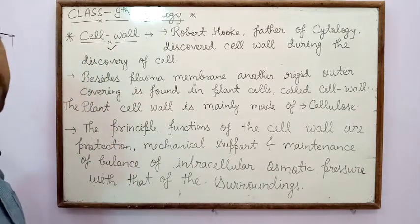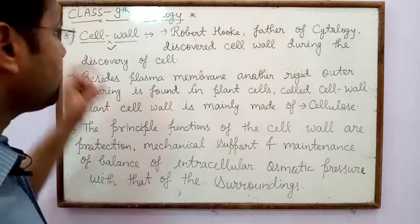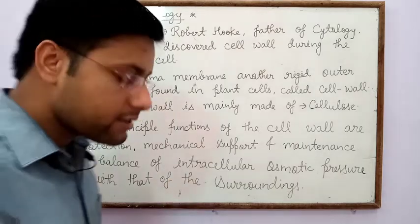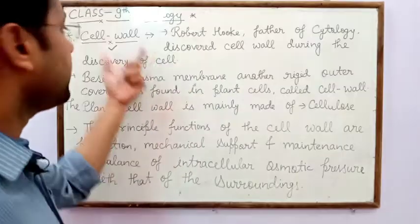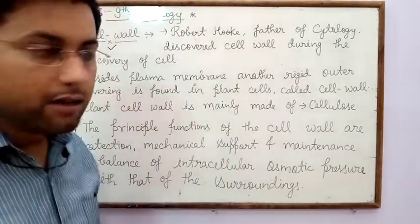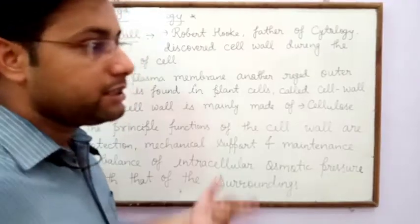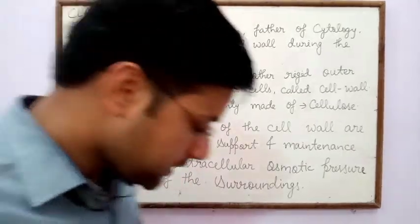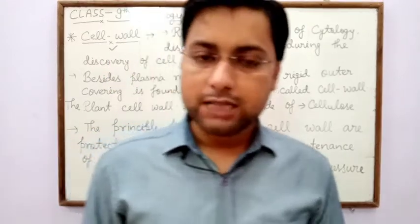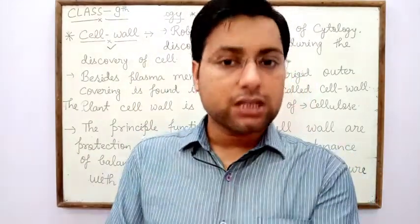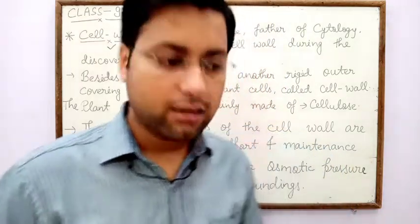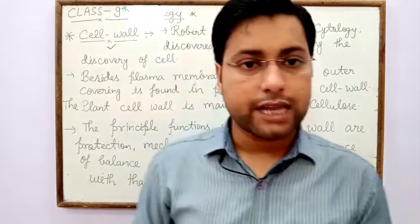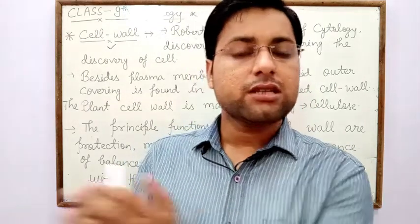Cell wall is present in all types of cells — that is plant cell, bacterial cell — except animal cell. Cell wall is especially present in plant cell, fungal cell, and bacterial cell. It is absent in animal cell because in animal cell, the outer membrane is called plasma membrane or cell membrane. Cell wall is present in plant, fungal, and bacterial cells, but their compositions are different.